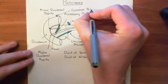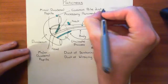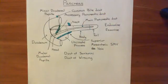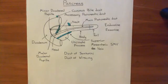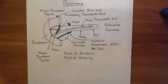That now concludes our discussion of the anatomy of the pancreas. In the next video we'll look at the histology of the pancreas. So far we've only really seen stuff relating to the exocrine function of the pancreas — when we look at the histology, we'll see the islets of Langerhans, which take on the endocrine function of the pancreas.